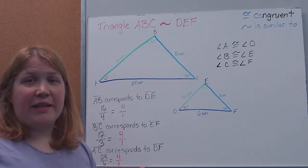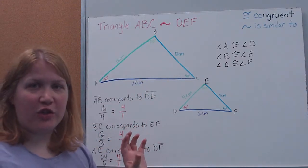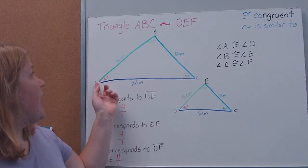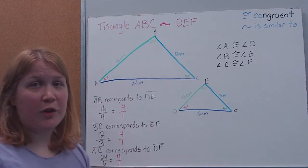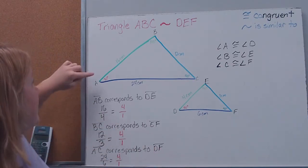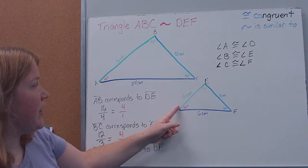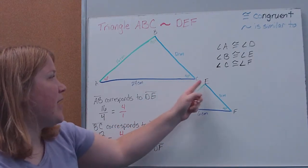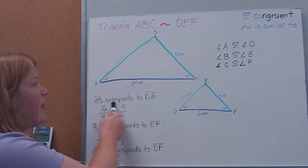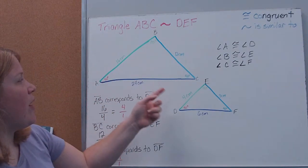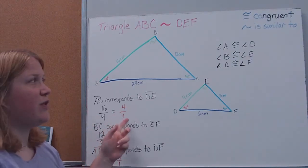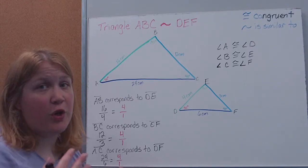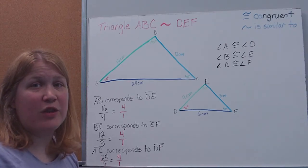The other thing we want to look at is the proportion of our sides. I've given you all of the measures here, so we're not solving for anything — this is just to set up our idea of similarity. Side AB corresponds to side DE; they're in the same relative position. So AB to DE is 16 to 4, which reduces to 4 over 1. We're going to reduce all of them into their simplest form to show that all sides create the same proportion.